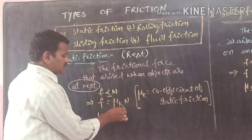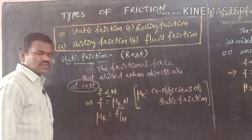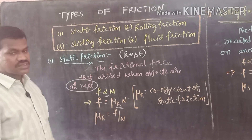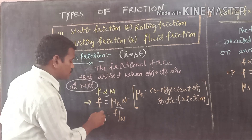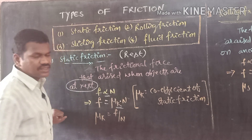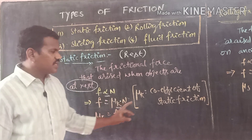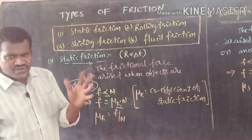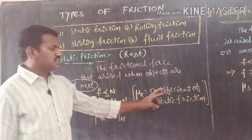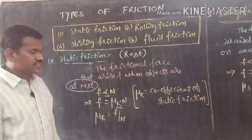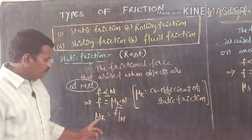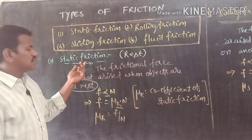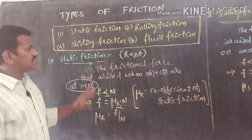To remove the proportionality, we introduce a constant represented by the letter mu. This constant applies because the bodies are at rest. So F is equal to mu k into N. Mu k is called the coefficient of static friction. If there is simply friction, we write mu; but here it is the coefficient of static friction. Mu k is equal to F divided by N.